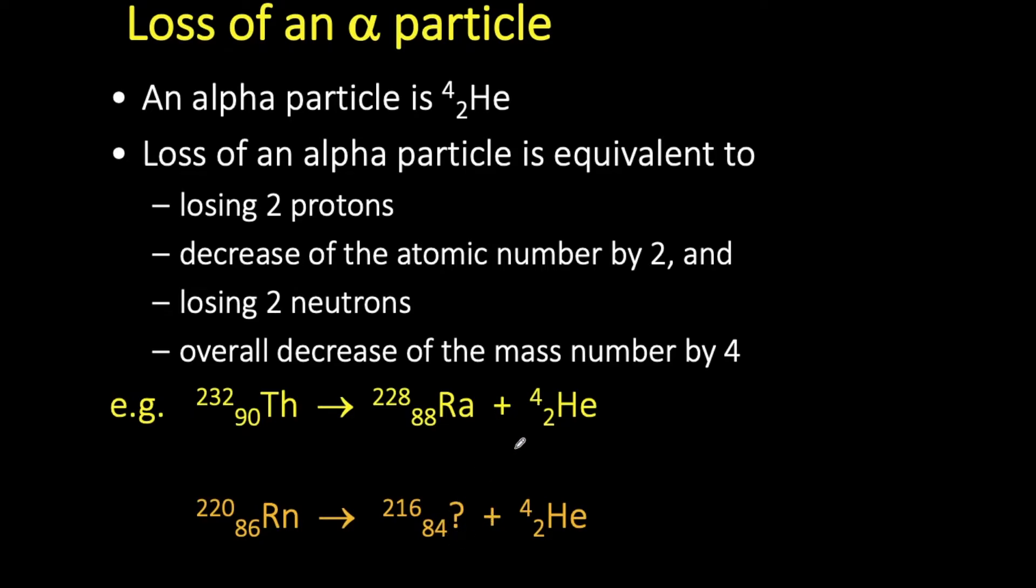The next step is to identify which element that's in here. We go to our data book and we find the element whose atomic number is 84. In this case, if we look at our data booklet, element number 84 is polonium. So when radon undergoes alpha decay, it forms polonium.